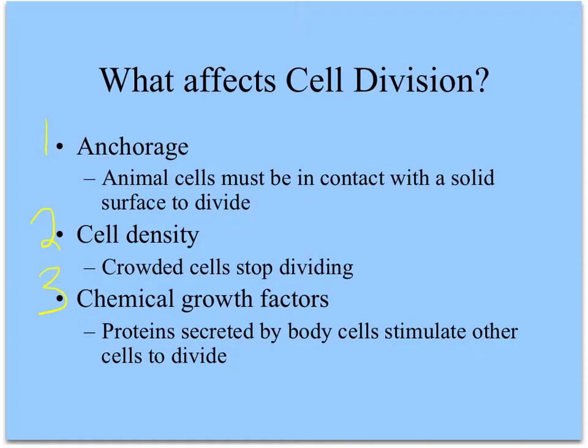First, whether or not a cell has anchorage. Now, this is just for animal cells. We're not talking about plants or funguses or bacteria or anything else here. But animal cells must be in contact with a solid surface to divide. So no free-flowing cell, just floating around in the blood. It's never going to divide. It's got to be touching something solid.